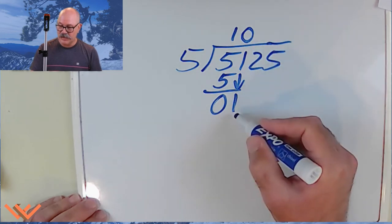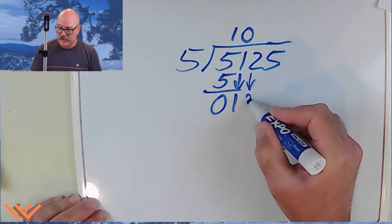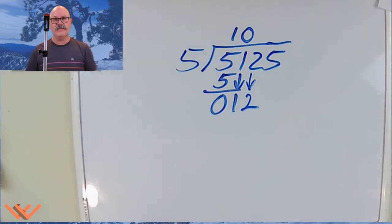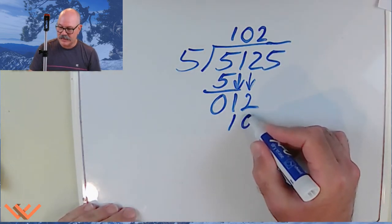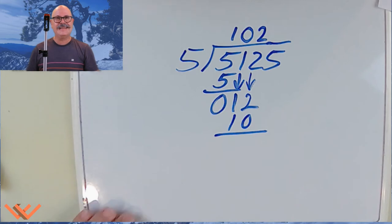Okay. So it's zero. So I can bring down this two now. And now I have something to divide by. So how many fives can go into 12? Five, ten. I can't go to 15 because that's too much. So I have five, ten. So I have two fives. That's ten. And I do that subtraction.